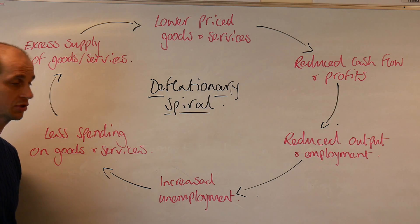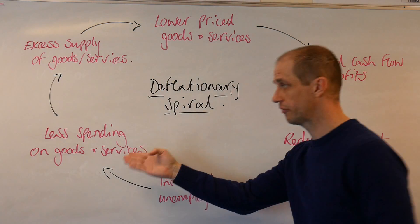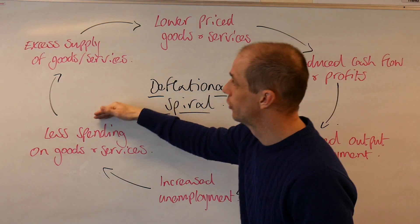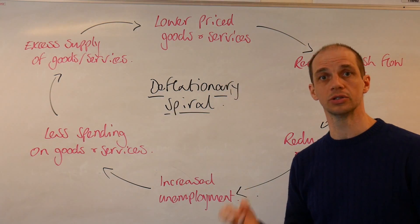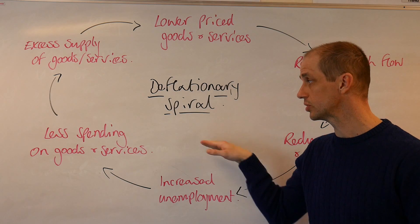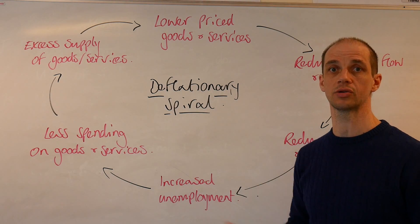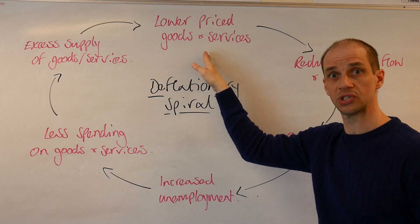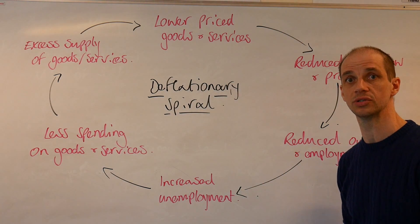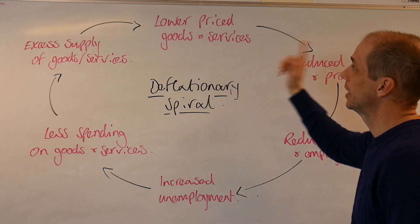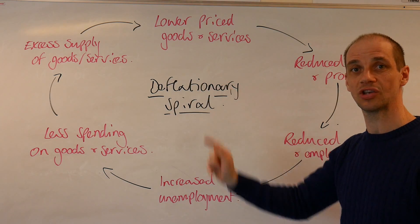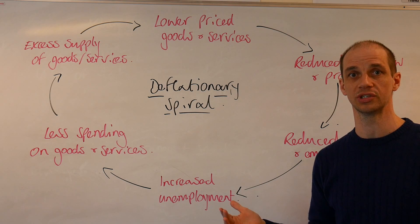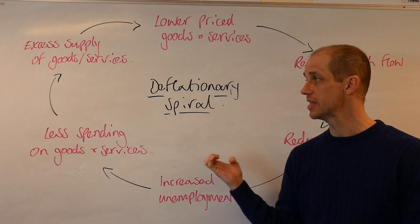Consumers and households are going to spend far, far less on goods and services. Further to this, there's likely to be unsold stock because of the contraction in aggregate demand taking place. And then we arrive back at our starting point where we've got lower priced goods and services. So we then begin this cycle again — you can really see how damaging the consequences of this can be.